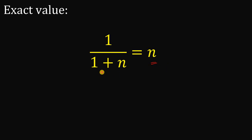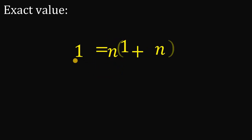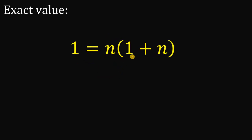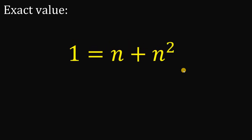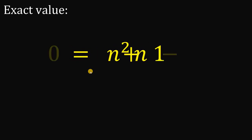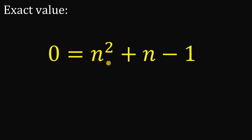To do that, let's multiply both sides by 1 plus n. If we do that, we get 1 equals n multiplied by 1 plus n. Now let's distribute this n, so we have n plus n squared. To solve this equation, let's equate this to 0 and rearrange some terms. So we have 0 equals n squared plus n minus 1.